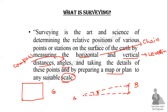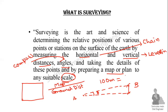What is scale? Scale is the ratio of ground distance to map distance. For example, if 100 meters on the ground is represented as 1 centimeter on the map, then the scale is 1 centimeter to 100 meters.